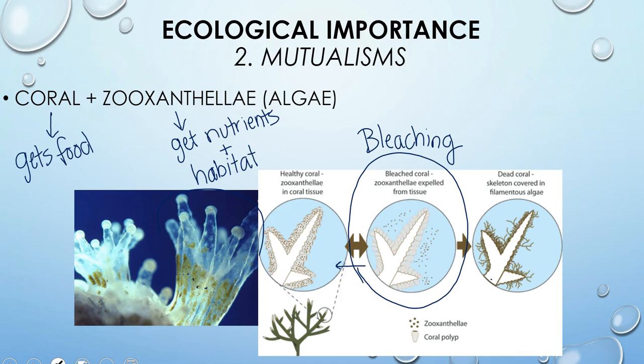One of the things that causes this bleaching is rising ocean temperatures. We're seeing mass amounts of bleaching in the Great Barrier Reef over the last few years as we have had the warmest years on record. This close mutualism between coral and algae is one of the things that keeps our coral reefs healthy, and it is in danger right now with global warming.